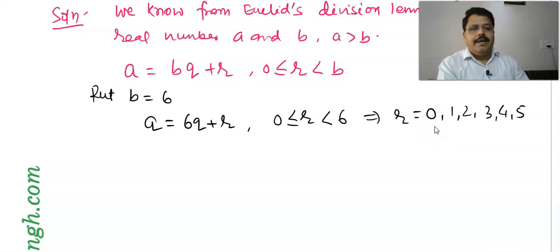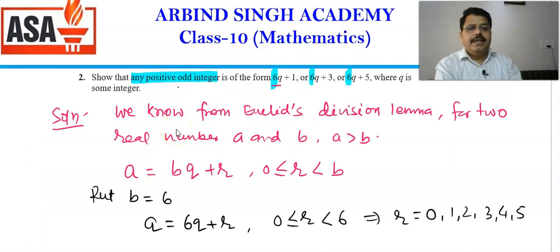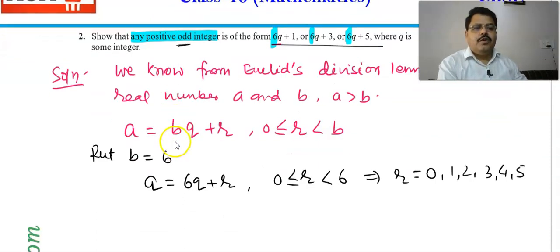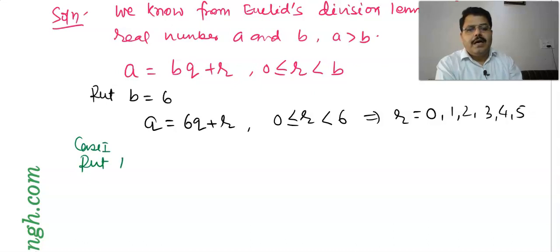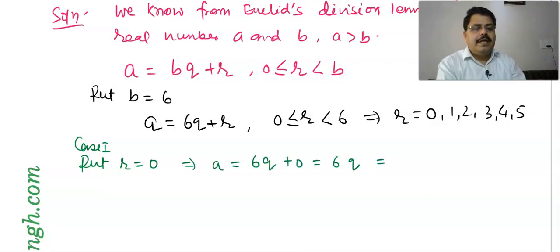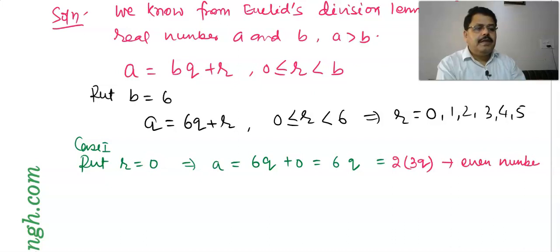Now we put r values one by one to see what form a takes. For odd integers, the form must match. Case 1: when r = 0, a = 6q = 2 × 3q. Any number multiplied by 2 is an even number, so this is an even number. Case 2: when r = 1, a = 6q + 1 = 2 × 3q + 1. Two times any integer is even, plus 1 is odd. So this is an odd number.